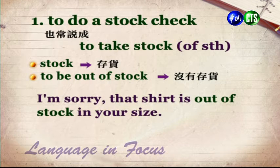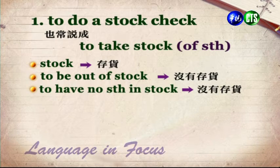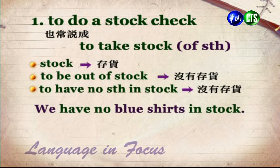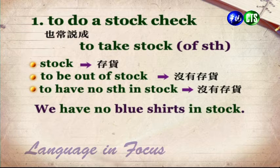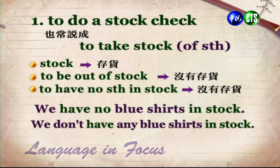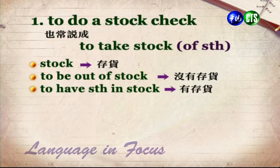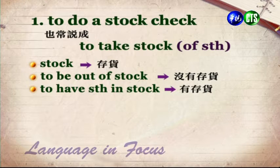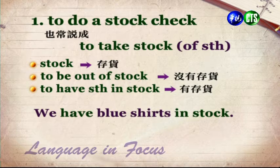To have no something in stock — 表示沒有存貨。We have no blue shirts in stock. 我們的藍襯衫沒有存貨了。這句話也可以說成 We don't have any blue shirts in stock。那有存貨的話，我們可以說 To have something in stock。We have blue shirts in stock — 我們的藍襯衫是有存貨的。